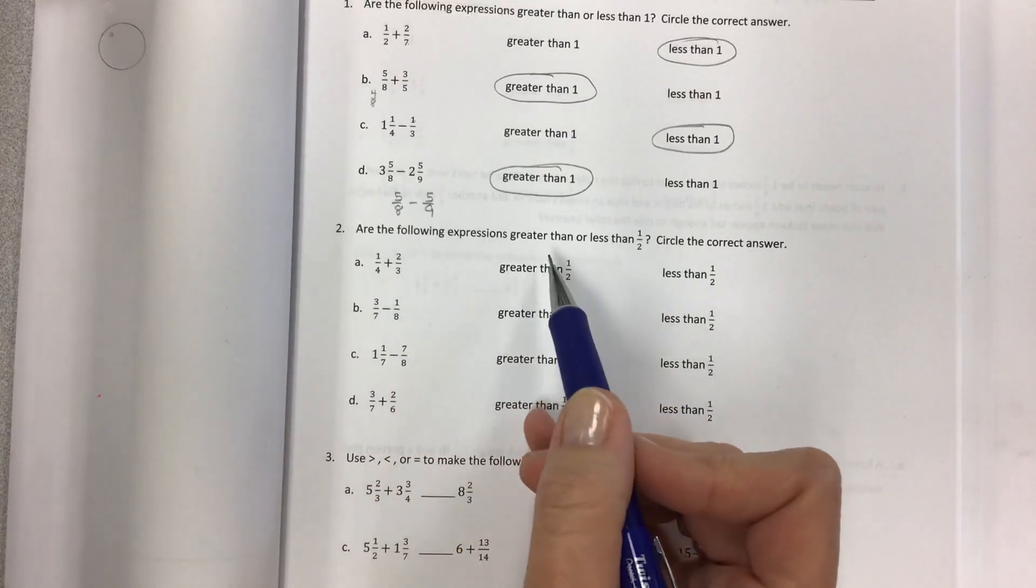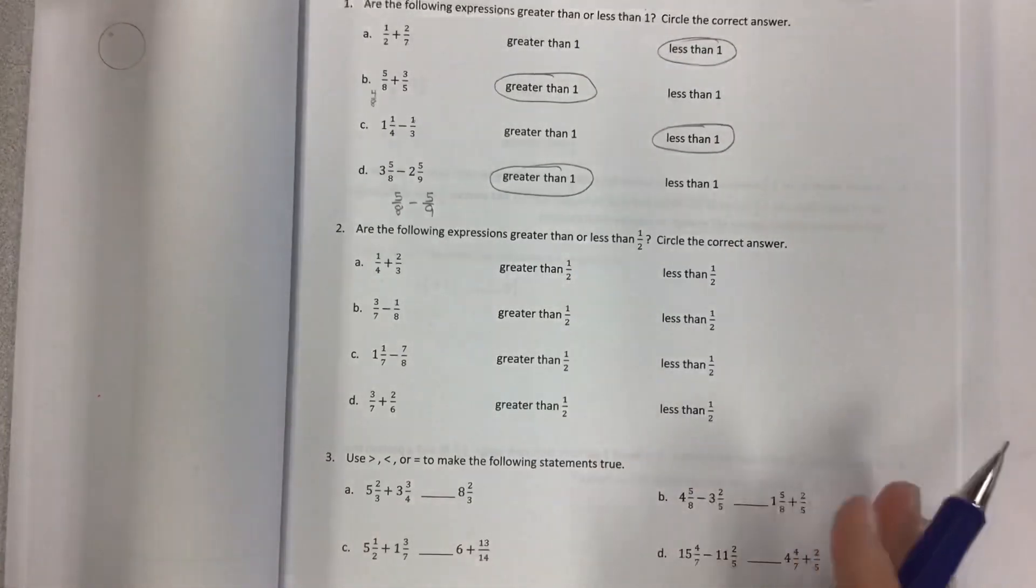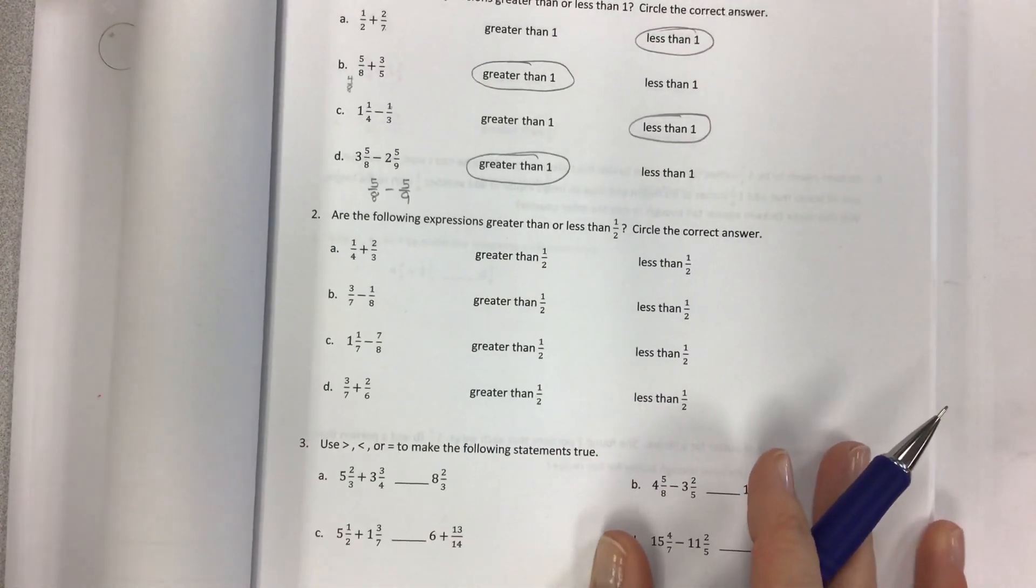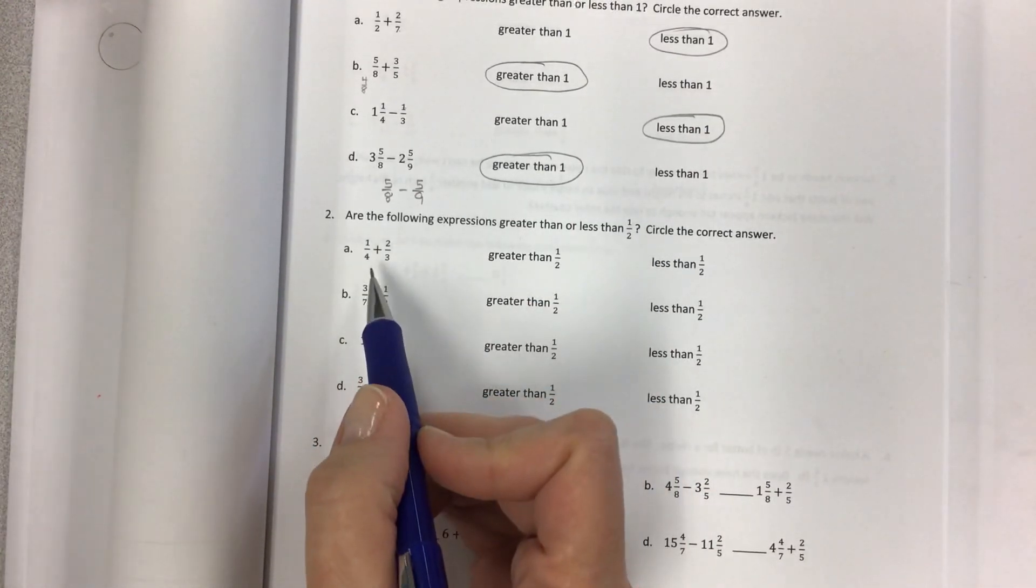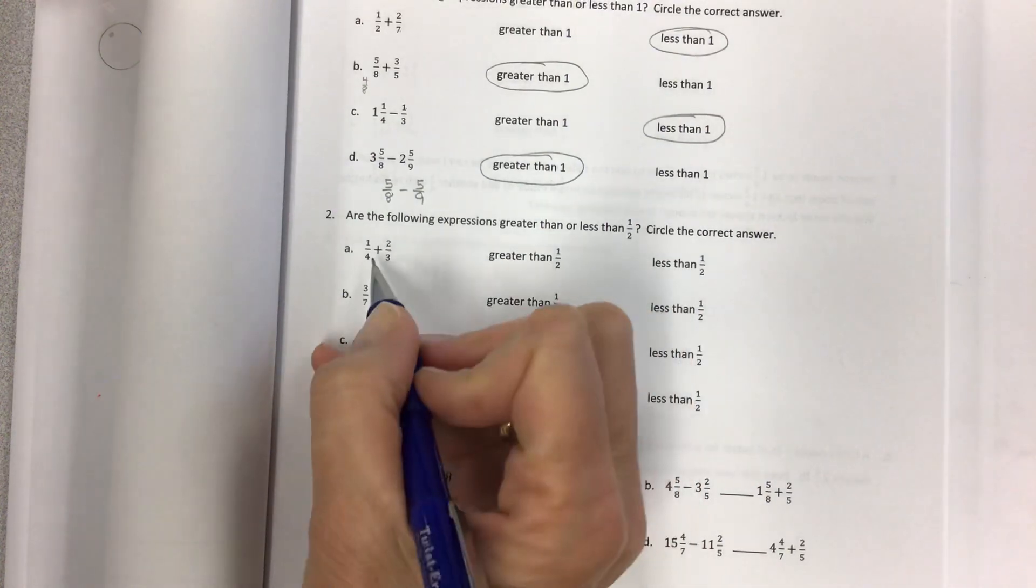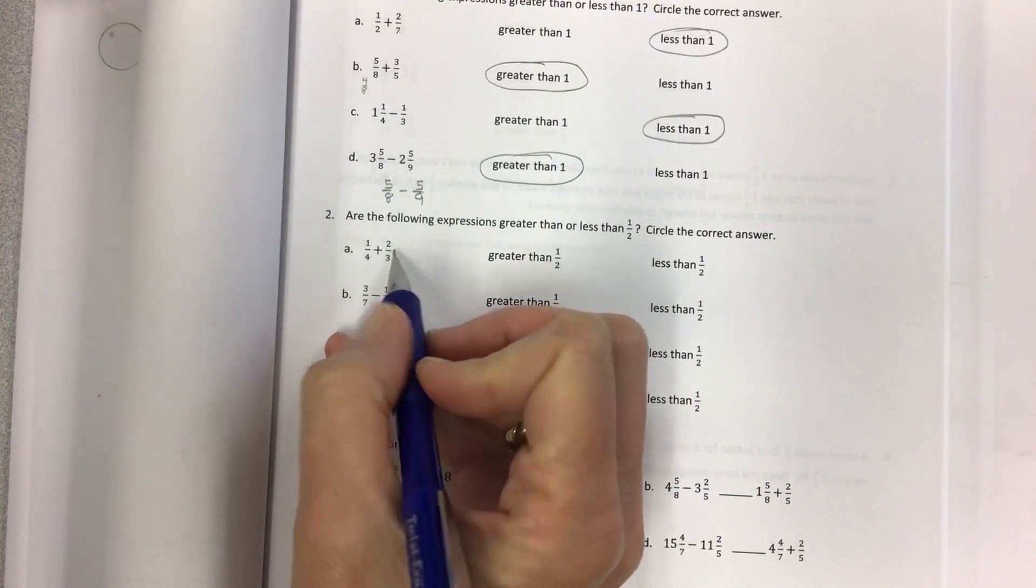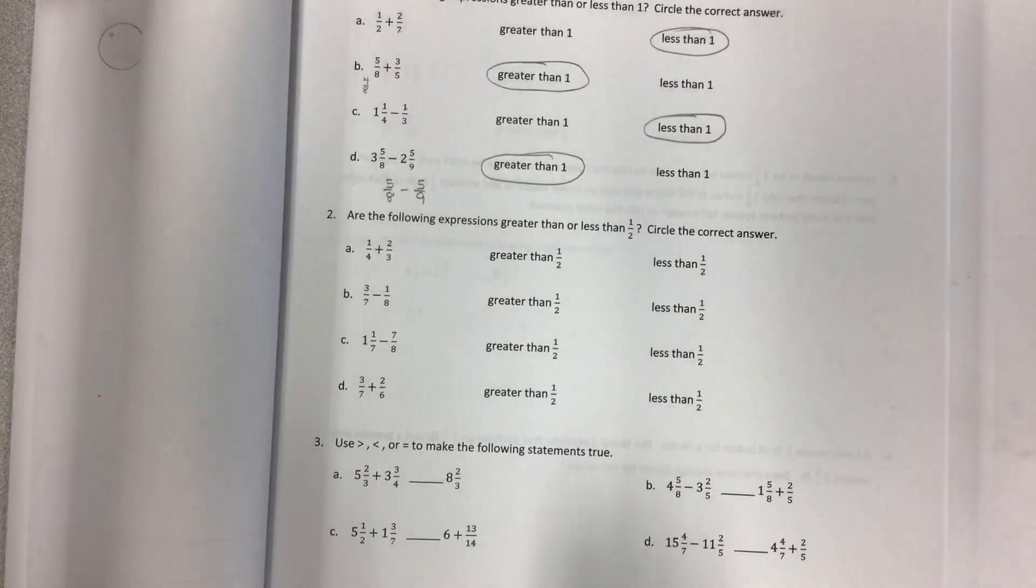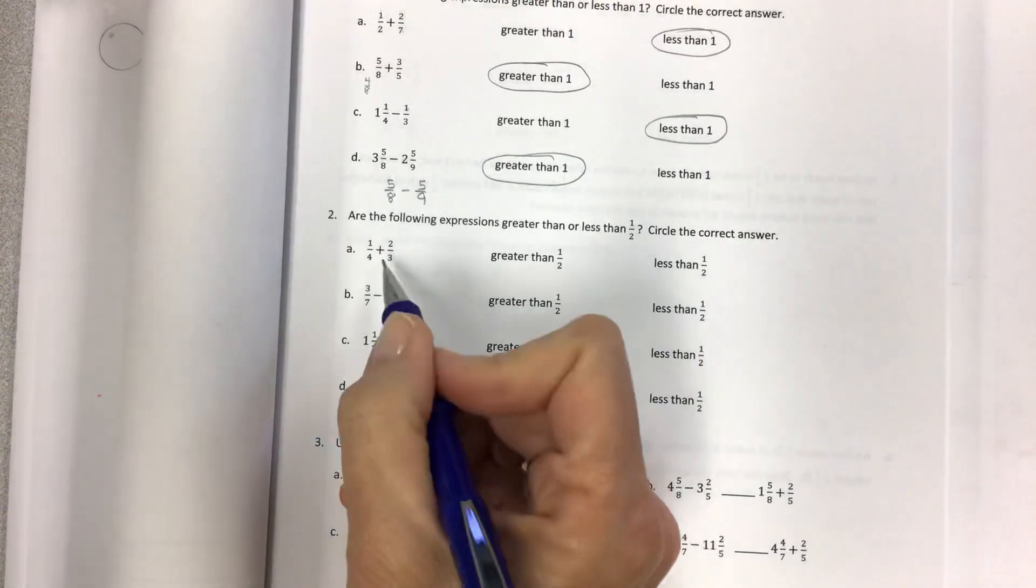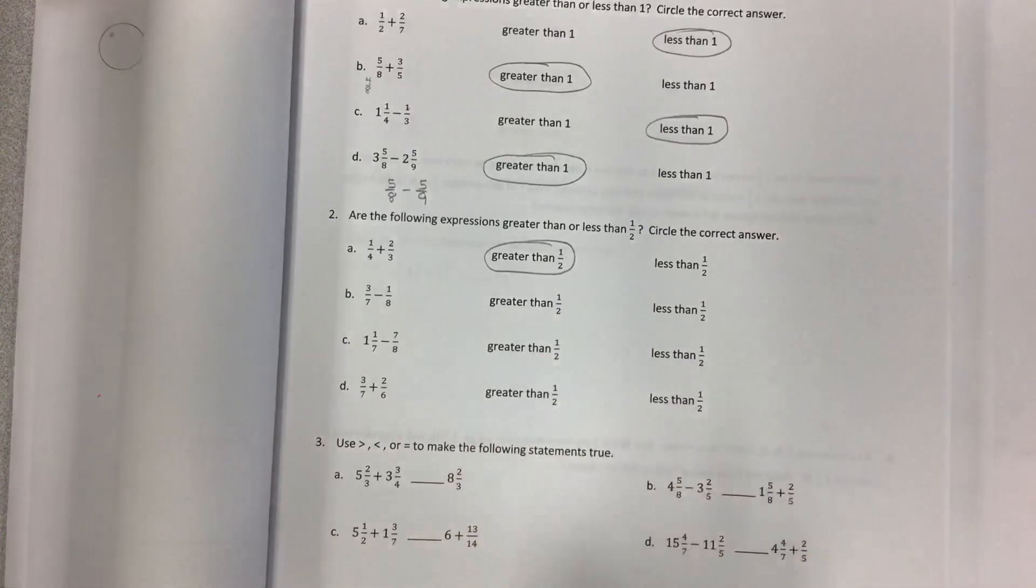Are the following expressions greater than or less than one half? So now instead of one being our benchmark, one half is our benchmark. Your benchmark can change. So one fourth plus two thirds. Now again, think of money. If I have one quarter and then I have two thirds, well what's the value of two thirds? It's more than half. And then I'm adding to that more. So it's going to end up being greater than half for my final answer.